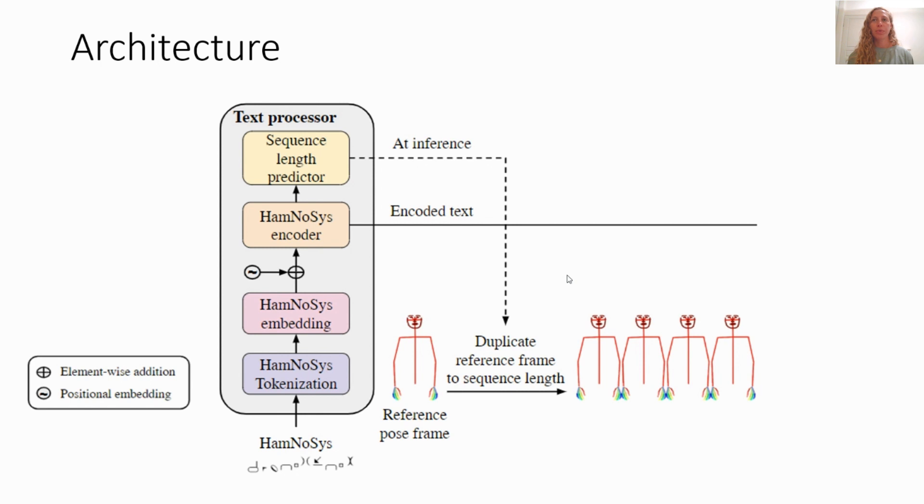Before moving on to the pose generator, we duplicate the reference frame into a constant sequence of this frame with the length of the sequence. During training, this is the ground truth length, while at inference, it is the predicted one.